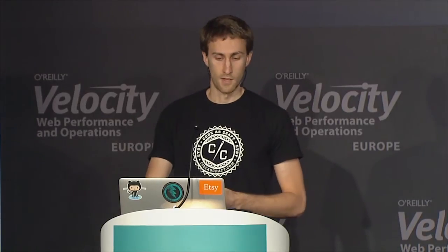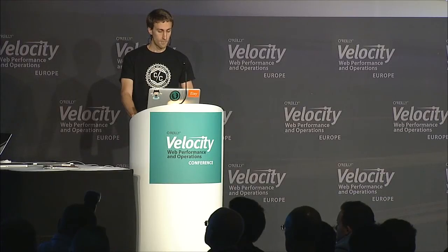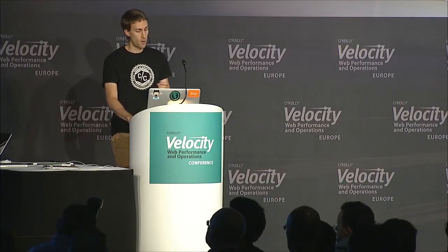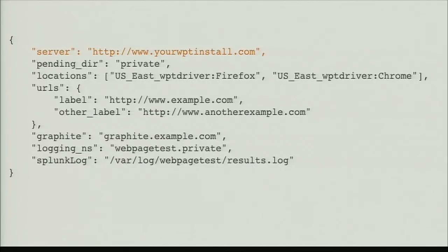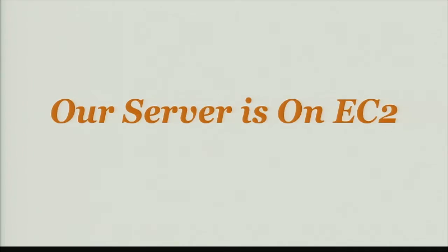We wanted to be able to do all of this at a very low cost. We tried to make the configuration as easy as possible. I'm going to walk through a configuration file for WPT Script really quickly. The first thing you do is you specify a server — this is the server running WebPageTest that you want to connect to. This can be your private instance, wherever that may be located, or it can be the public WebPageTest.org instance. Our server happens to be on EC2, and it's pretty easy to set up there.